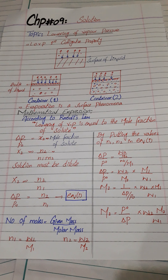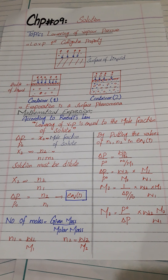In container 2, we have added solute. The blue dots represent solute particles and the red particles represent solvent particles. When solute is added, the solute particles hinder the vapor form — they block the solvent molecules from escaping. So the vapor pressure is lower when solute particles are added.